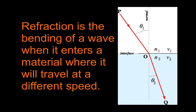Refraction is the bending of a wave when it enters a material that it will travel at a different speed. Here is our ray of light — it could be light or sound but we're talking about light — traveling through the upper material, which is air. It crosses this boundary and travels through a different material at a slower speed. Therefore it's going to bend towards what we call the normal line, and you can see that theta 2, the angle of refraction, is less than theta 1, the angle of incidence.